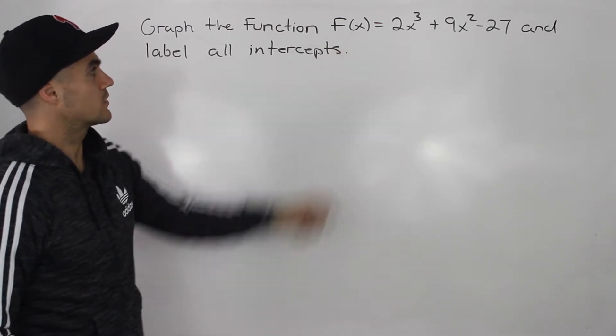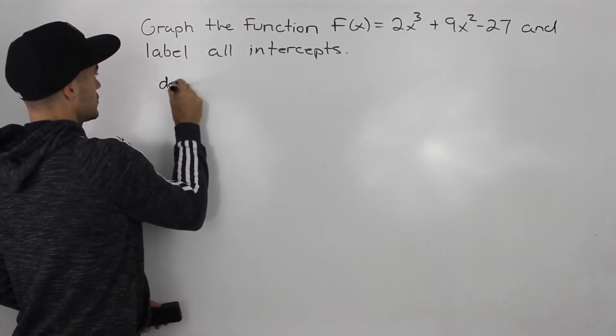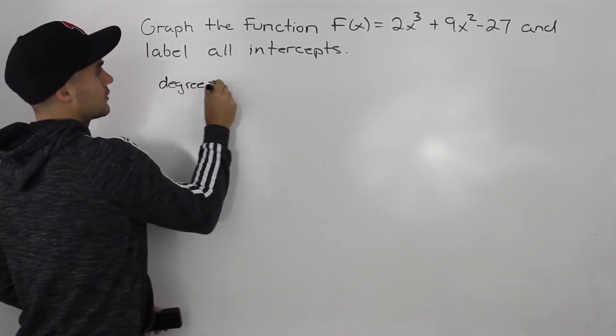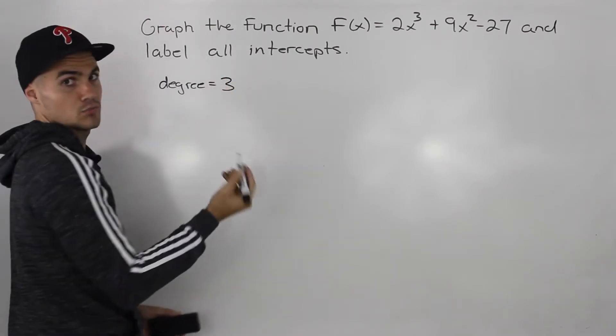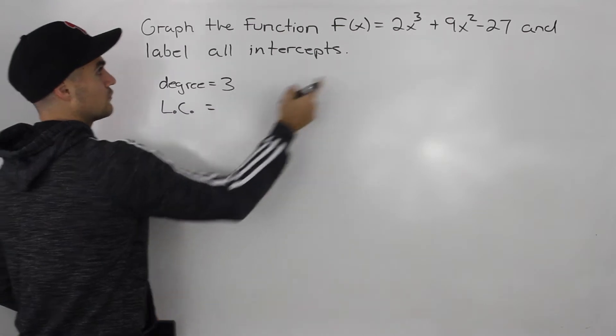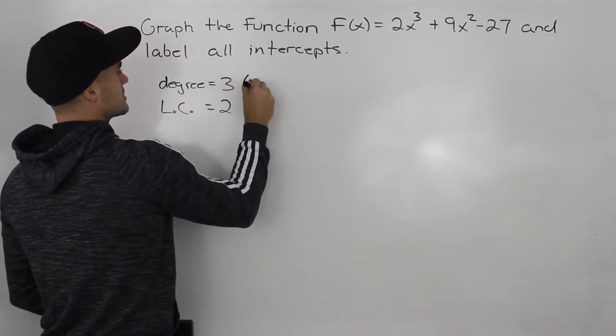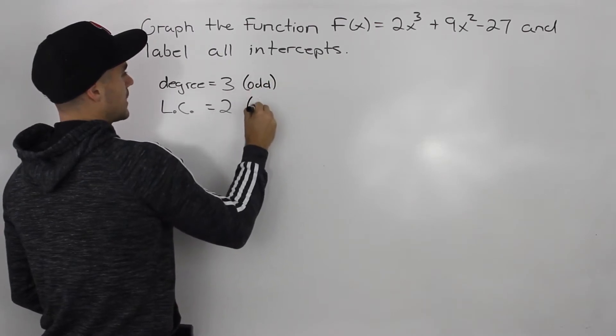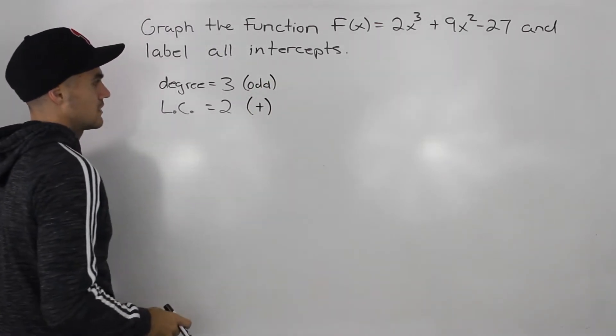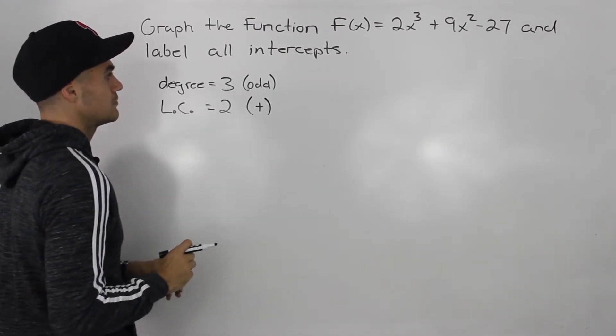Whenever we're given a function like this, you want to first know what the degree is. So the degree of this function is 3, it's a cubic function. What's the leading coefficient? Leading coefficient is 2, so this function has an odd degree and a positive leading coefficient, and that's going to help us when we graph and figure out the end behaviors.